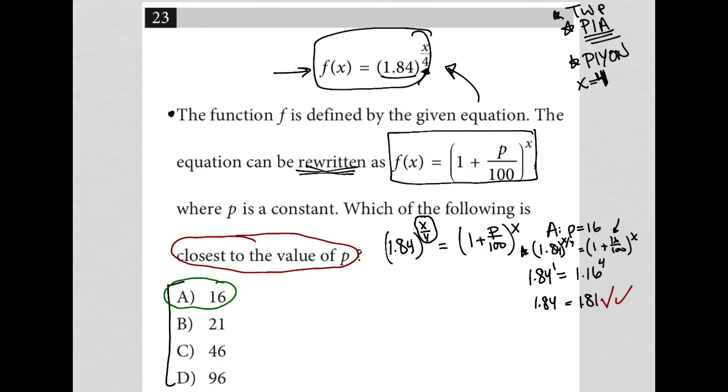So choice B, I'm still going to say x equals 4. So choice B will still get me this 1.84 value, but it'll be 1.84 is equal to 1 plus 21 over 100 to the 4th power. Which, 21 divided by 100 is 0.21, 1 plus 0.21 would be 1.21. So 1.21 to the 4th power. I can check that in my calculator. 1.21 to the 4th power. Well, that gets me 2.14.